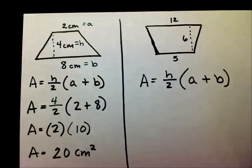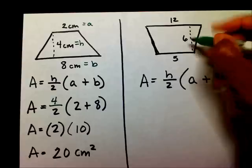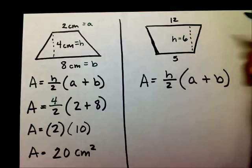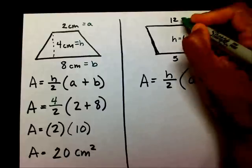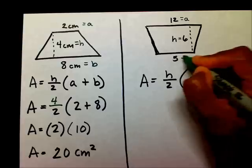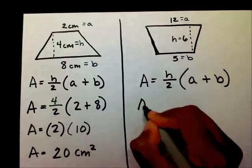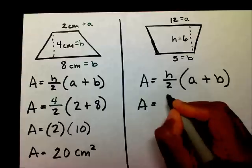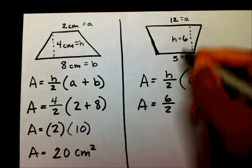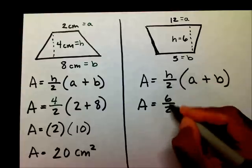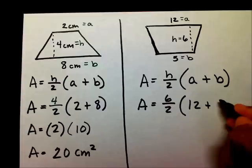Let's label our h first. Well, our h is going to be our height. Our a, b will be the two parallel lines. So, this is going to be our a, and this is going to be our b. So, now I'm going to write a equals 6 over 2, because that's my h, divided by 2, times a is 12, plus b, which is 5.